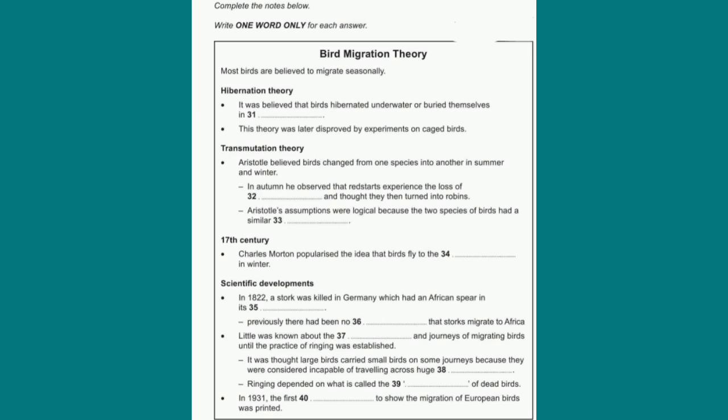Now listen carefully and answer questions 31 to 40. Scientists believe that a majority of the Earth's bird population migrate in some fashion or other. Some travel seasonally for relatively short distances, such as birds that move from their winter habitats in lowlands to mountaintops for the summers. Others, like the Arctic Tern, travel more than 25,000 miles seasonally between the northern and southern poles.